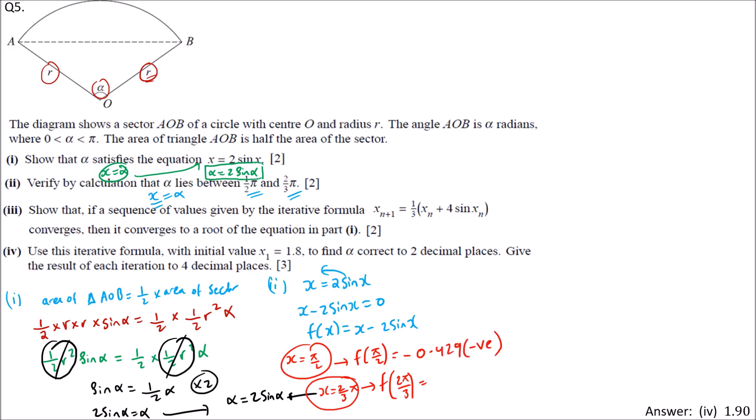Next, for 2pi/3, we calculate 2pi/3 minus 2 times sin of 2pi/3. To 3 significant figures, we get 0.36, which is positive.